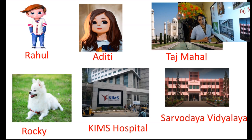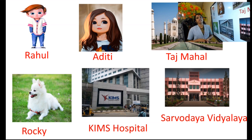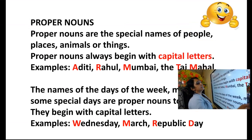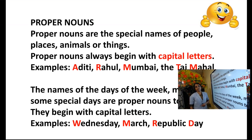Common noun means a general name given to a person, place, animal, or thing. Proper noun means a particular, special name given to a person, place, animal, or thing. The definition in your textbook is: proper nouns are the special names of people, places, animals, or things. And always remember — proper nouns begin with capital letters. Proper nouns always begin with capital letters.